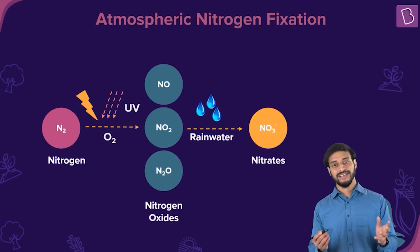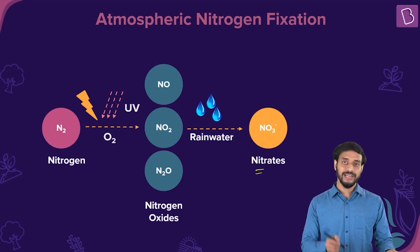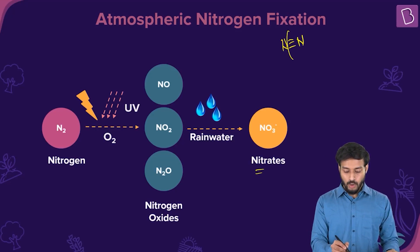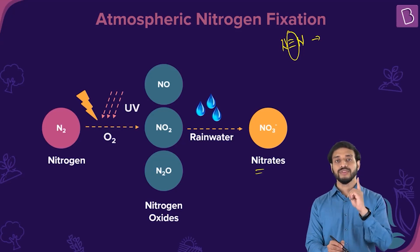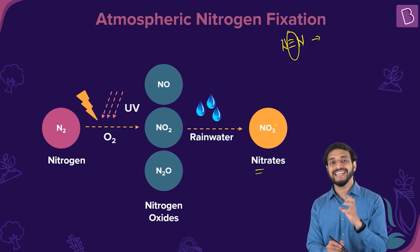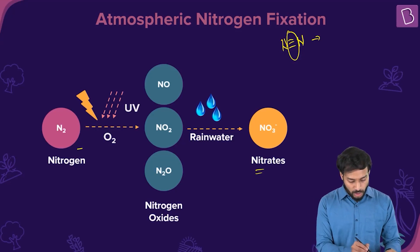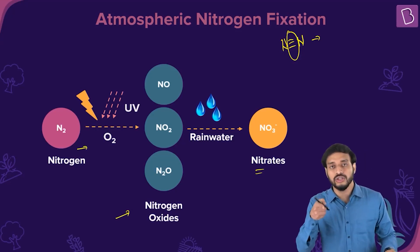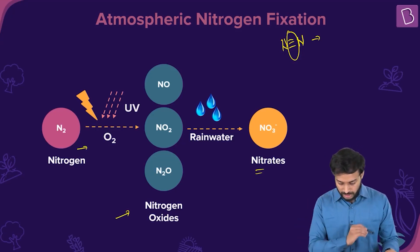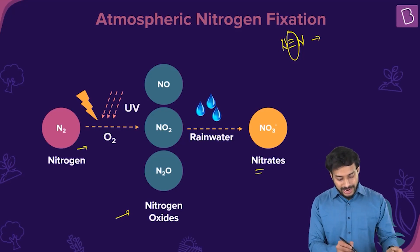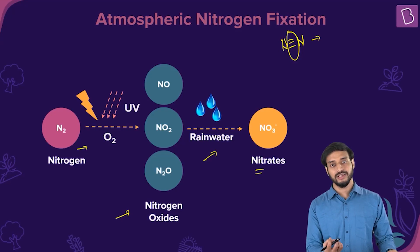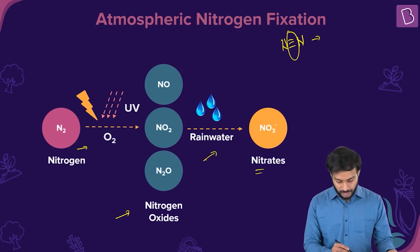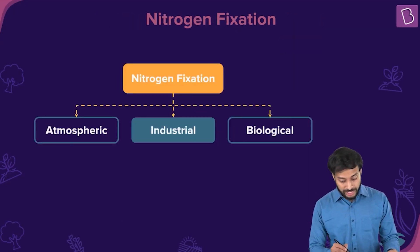These nitrogen oxides, when they combine with rainwater, form nitrates. So the N≡N bond is broken by UV radiation and lightning, and nitrogen combines with oxygen in different forms to yield nitrogen oxides. Those nitrogen oxides combine with rainwater and form nitrates that come down into the soil with rain.